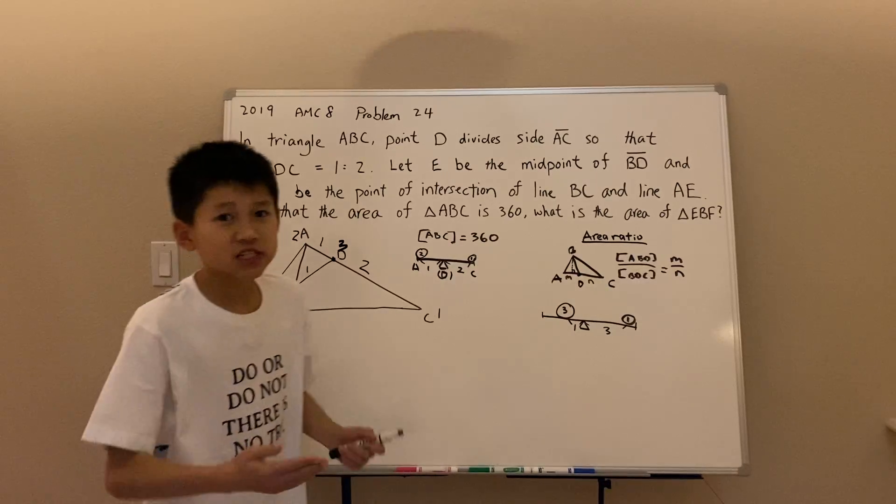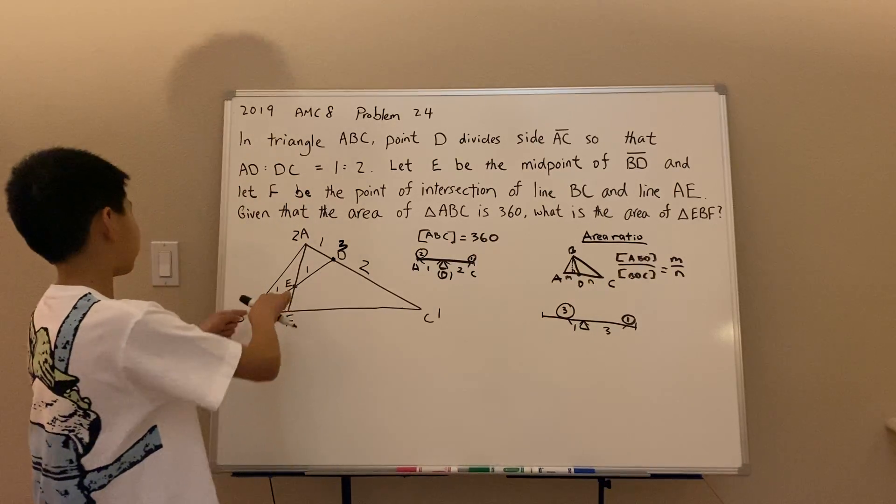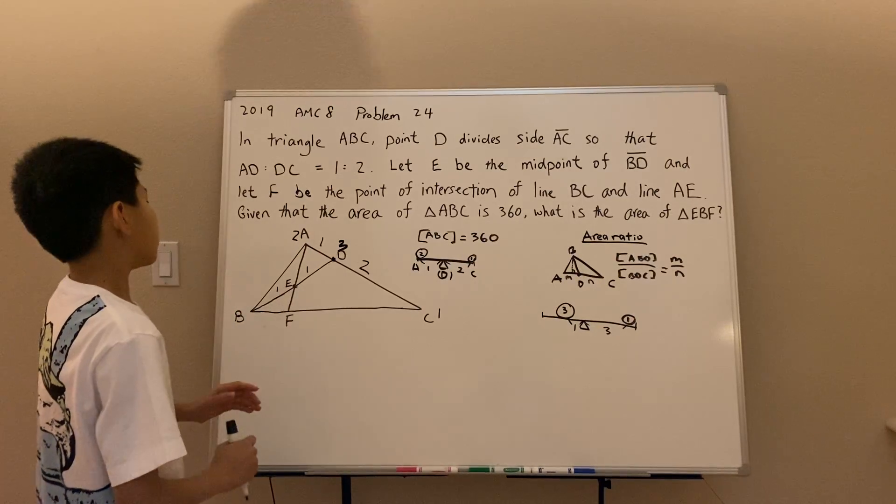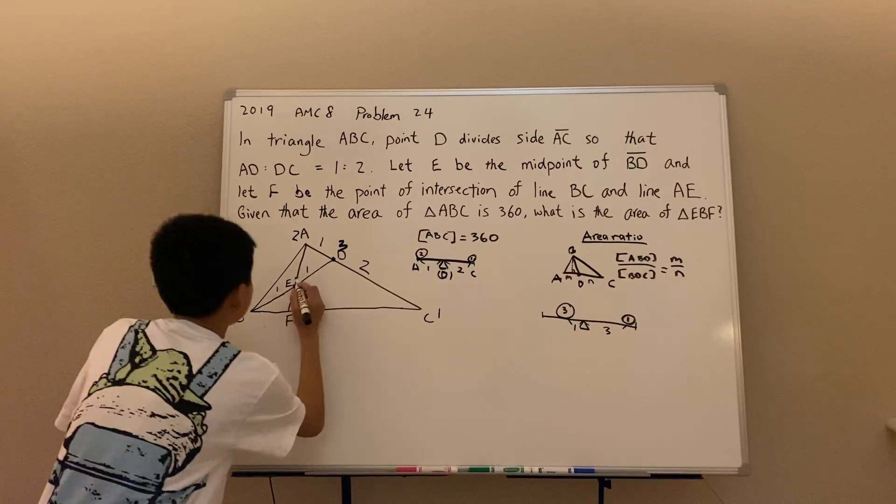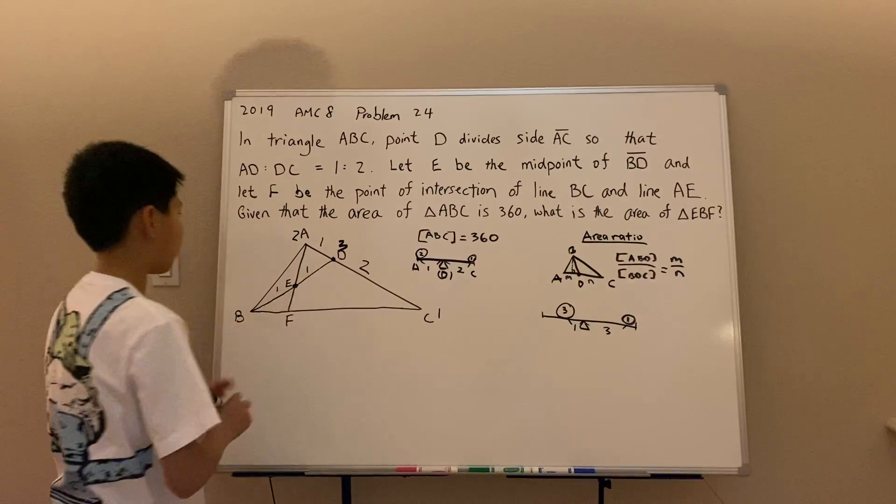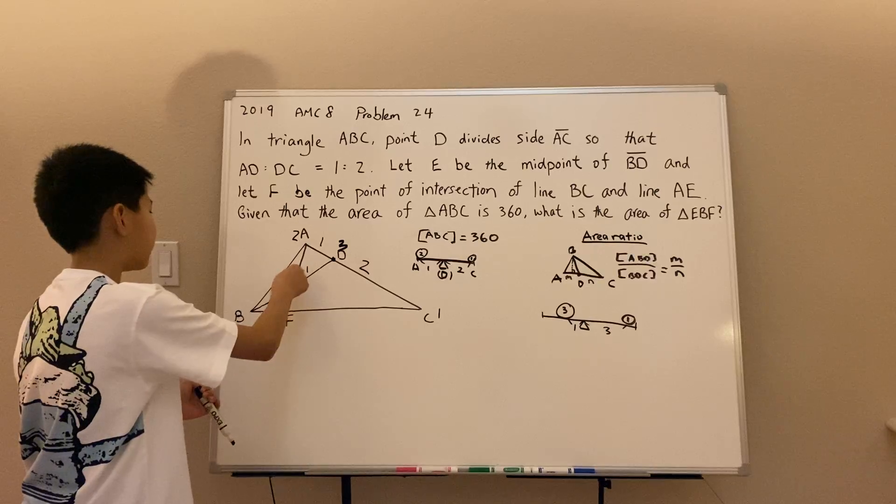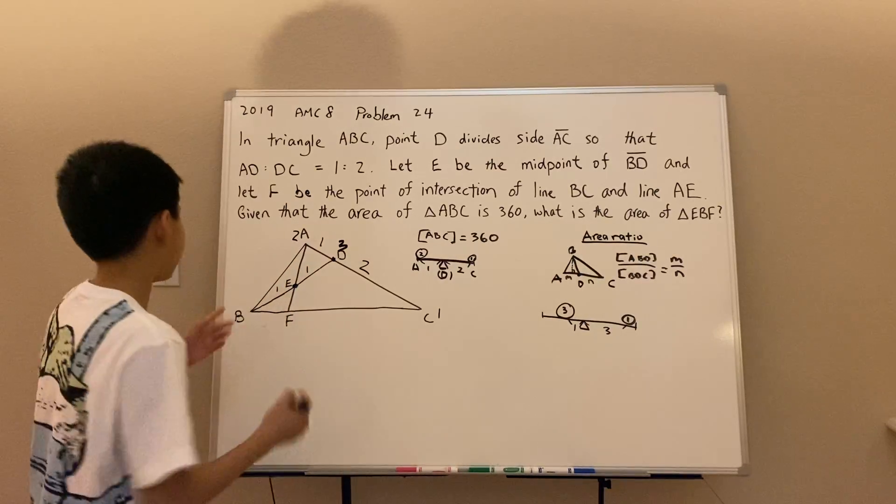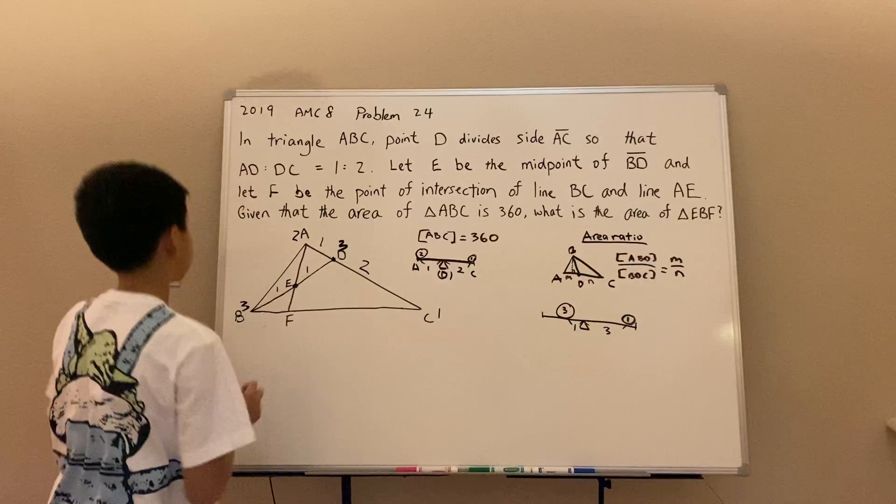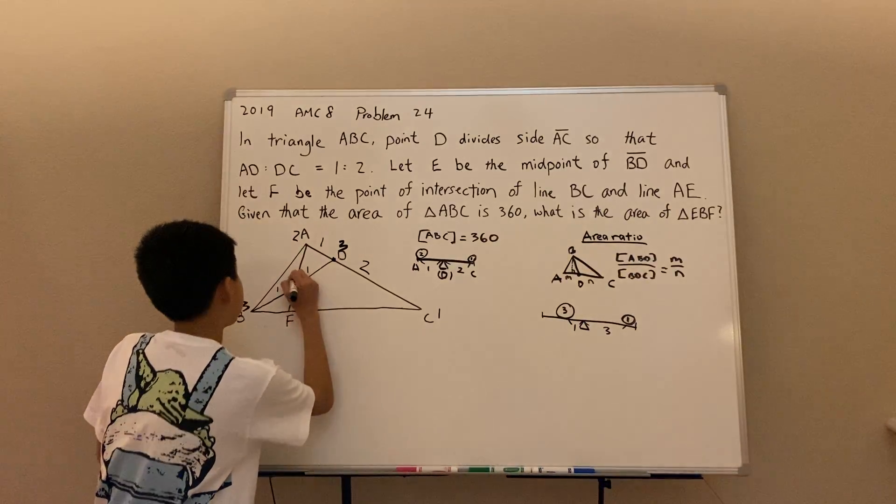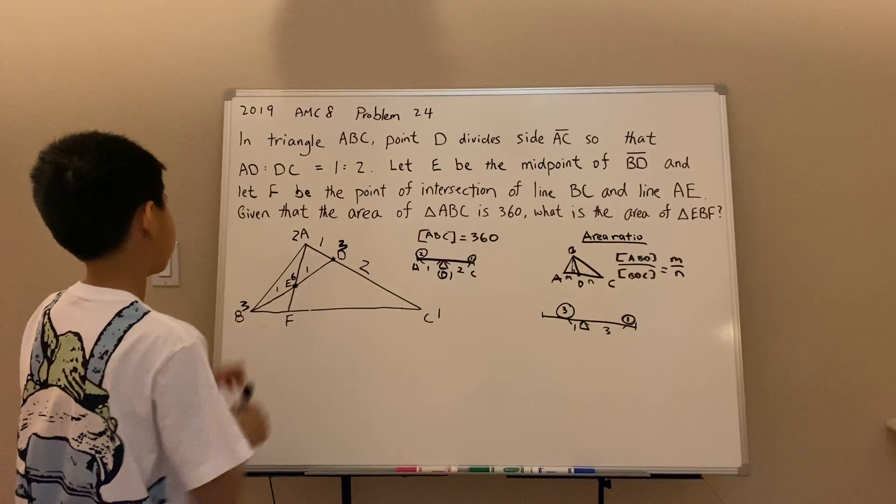Using very similar logic, we can look at seesaw BED. We can let E be the fulcrum in this case. Let E be the fulcrum. Well, then to balance it out, three times one has to be equal to one times what? Well, the mass of D is obviously that's three. So in total, E is just six, three plus three.